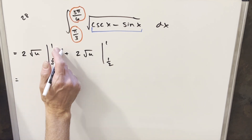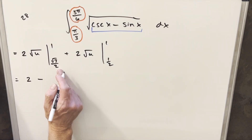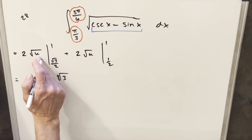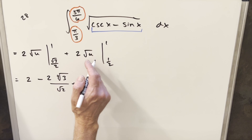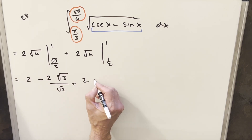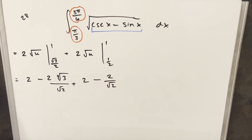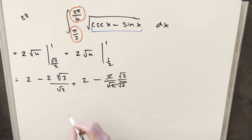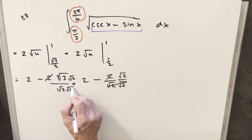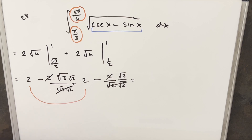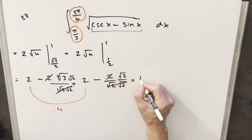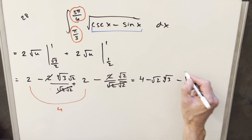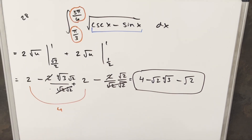Now we evaluate carefully. For the first piece: plugging in 1 gives 2, minus plugging in √3/2 — this gives the fourth root of 3 divided by the square root of 2, since we have the square root of 3 inside another square root with √2 in the denominator. For the second piece: plugging in 1 gives another 2, minus plugging in 1/2 gives 2 over √2. Rationalizing both terms, the denominators cancel cleanly. Adding the two 2's gives 4. So the final answer is 4 minus √2 times the fourth root of 3, minus √2. It's an ugly answer, but that's how it is sometimes.